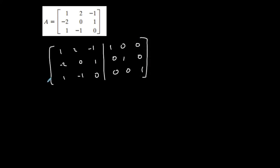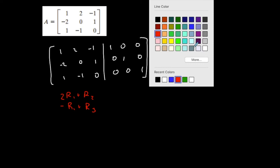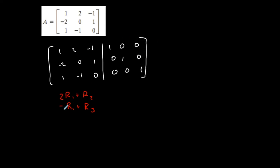I want to make the identity matrix on the left. I need zeros under this one — I already have a 1 in the top left corner, which is great. Now I need zeros underneath it. I'm going to do multiple row operations in one step: take twice row one and add it to row two, and take the opposite of row one and add it to row three. So I'm only changing row two and row three. Row one stays: 1, 2, negative 1 | 1, 0, 0.